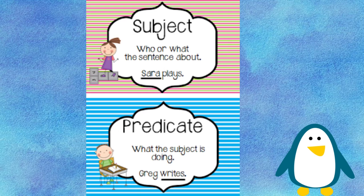A predicate is what the subject is doing. Greg writes. Greg is a proper noun. Writes is the verb. Greg is the subject. Writes is the predicate. Writes is the second part of the sentence. Together, the subject and the predicate make a complete sentence.